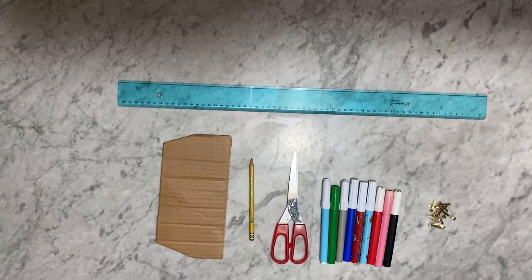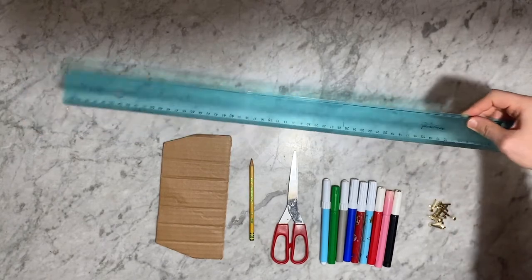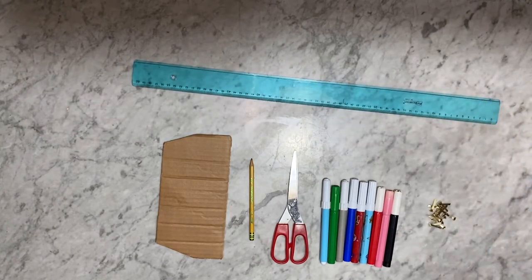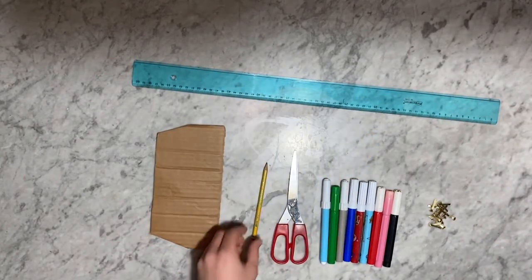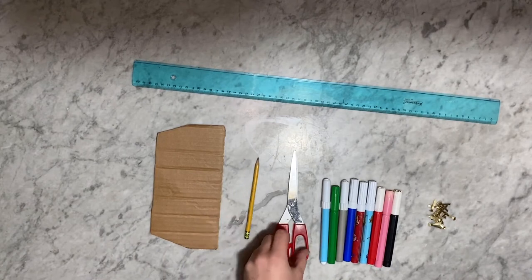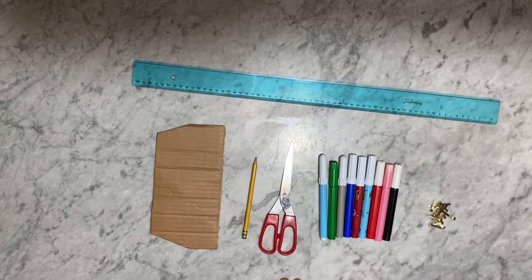To build moving shapes, we need a ruler, some cardboard, a pencil, some scissors, colored markers, and simple clips.